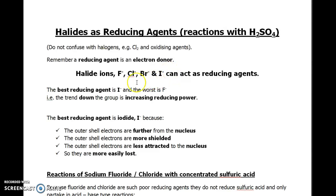The trend down the group is that as you progress down Group 7, there is an increase in the reducing power of the halide ions. That is to say, iodide is the best reducing agent, fluoride is the worst.